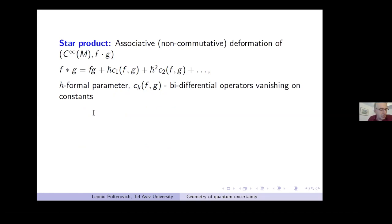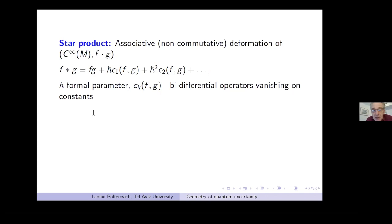There are two quite different approaches to quantization. The first is deformation quantization, or star product, where we view quantization as a deformation of the usual product structure on functions. If h-bar is a formal parameter, we define the operation f ★ g = fg + h-bar·C₁(f,g) + h-bar²·C₂(f,g) + etc., where the Cₖ are differential operators.